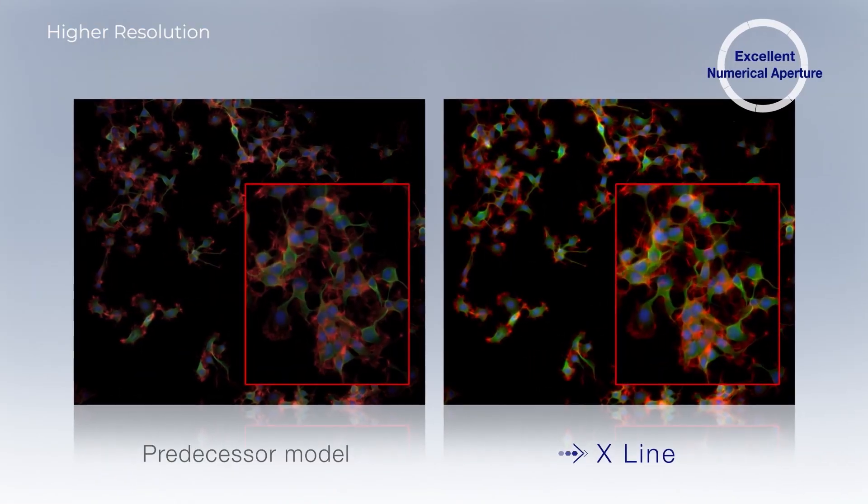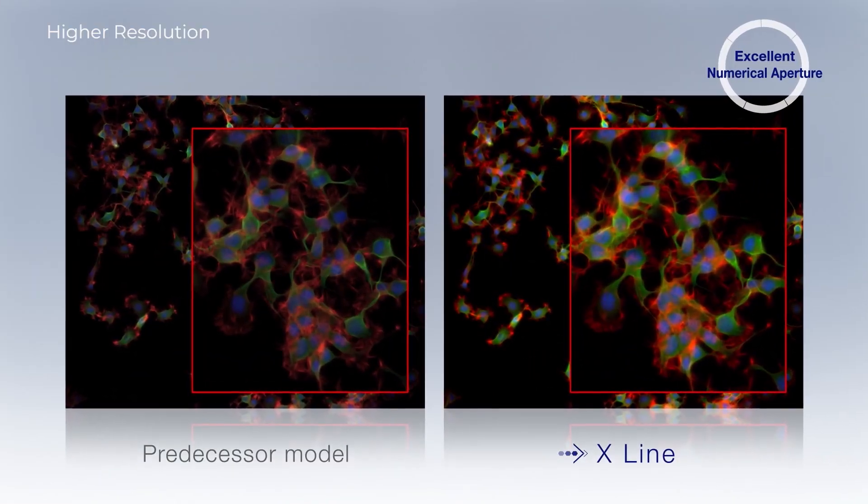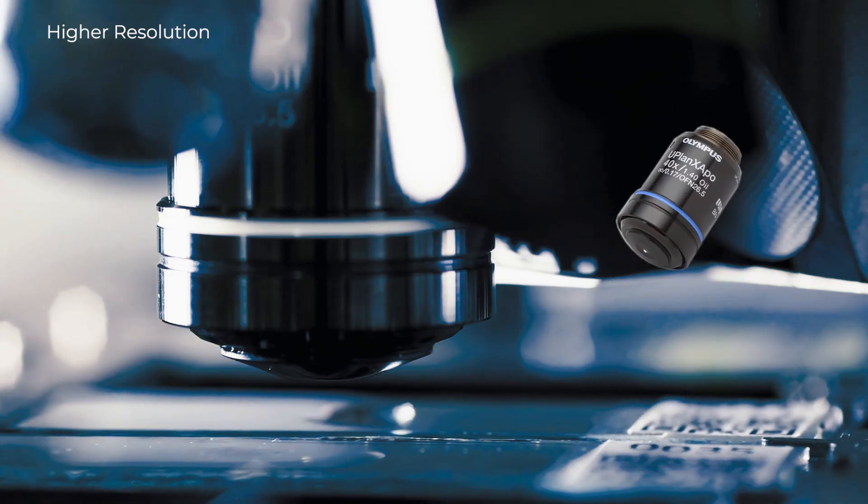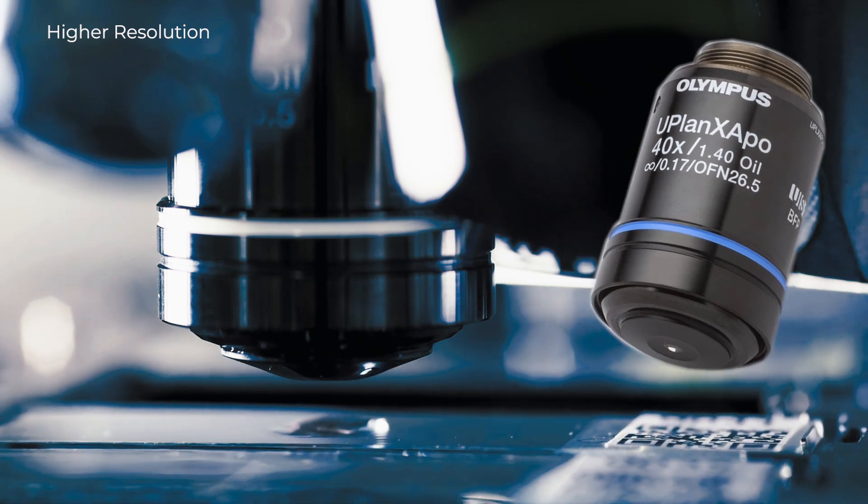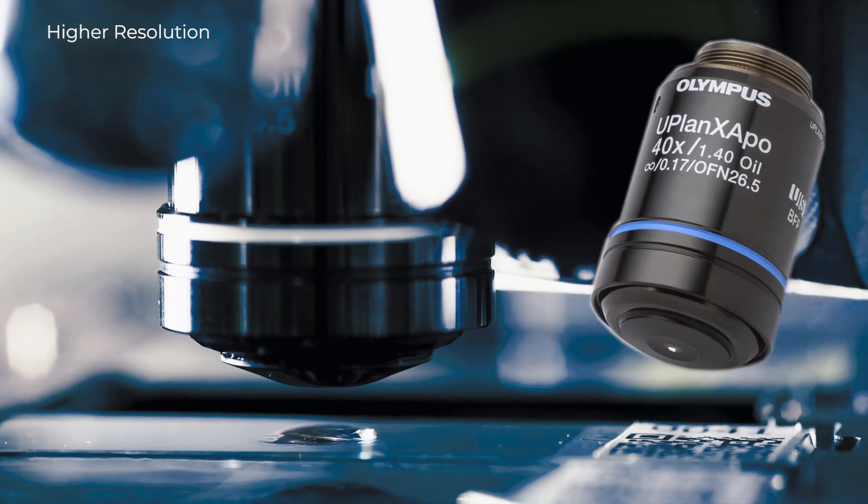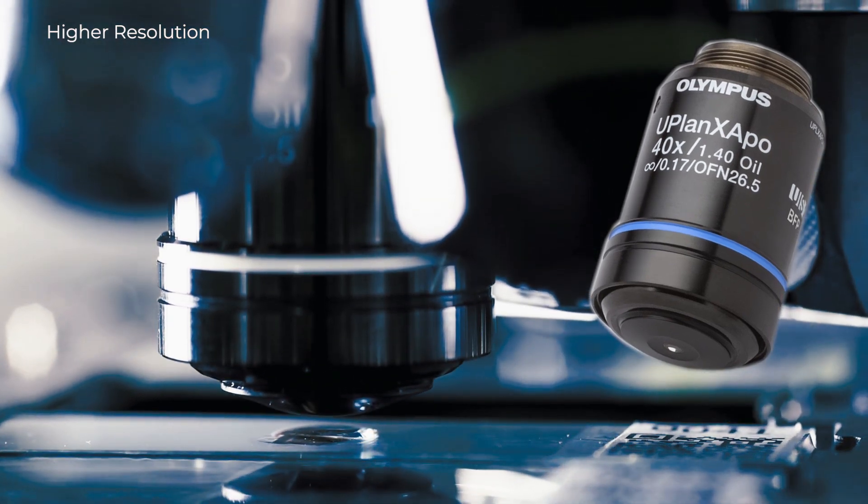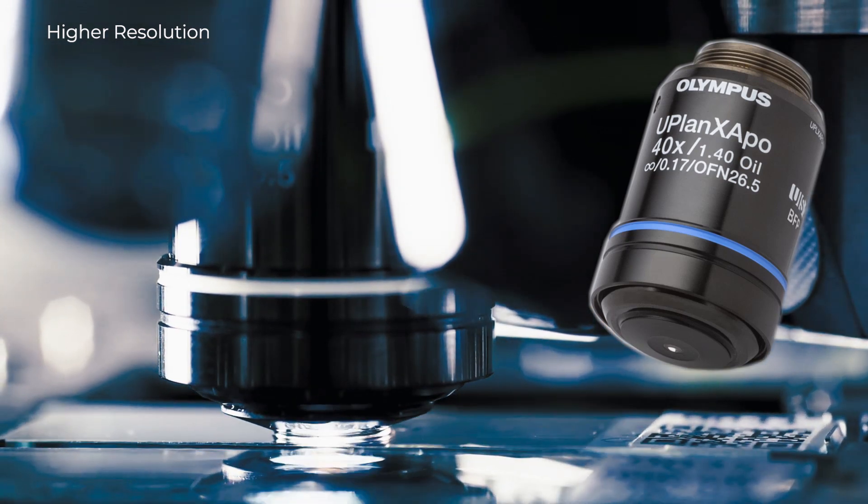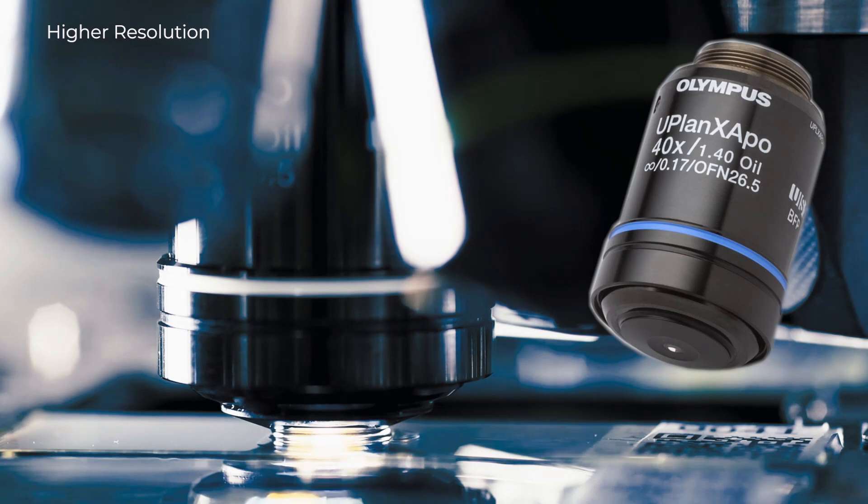Objectives with a larger numerical aperture gather a wider range of light, resulting in brighter, higher resolution images. Our 40X OIL X-Line objective features a numerical aperture of 1.4, equivalent to 60X and 100X offerings for the same image quality over a wider field of view, which can be less damaging for samples.